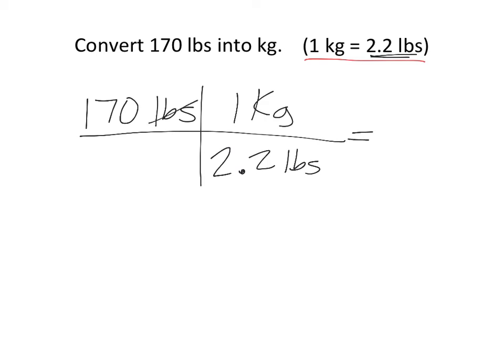So in this case, pounds will cancel. To figure out the answer, you're going to take 170 times 1, which is just 170, divided by 2.2. And when I do that, I get 77.3 kilograms.